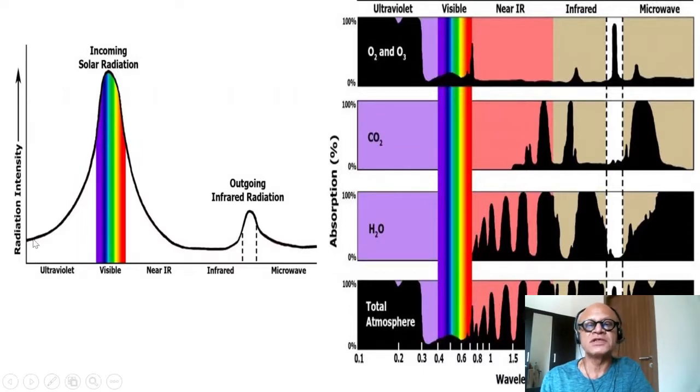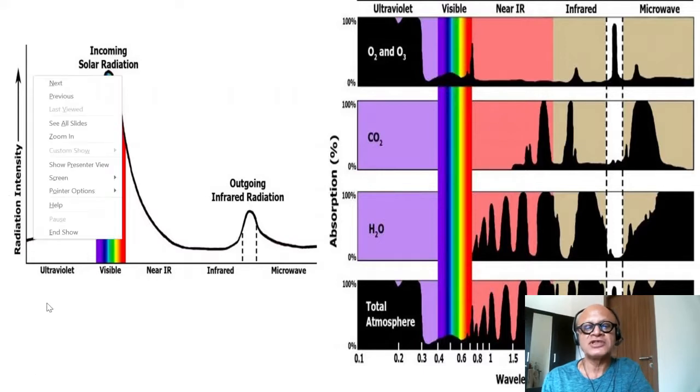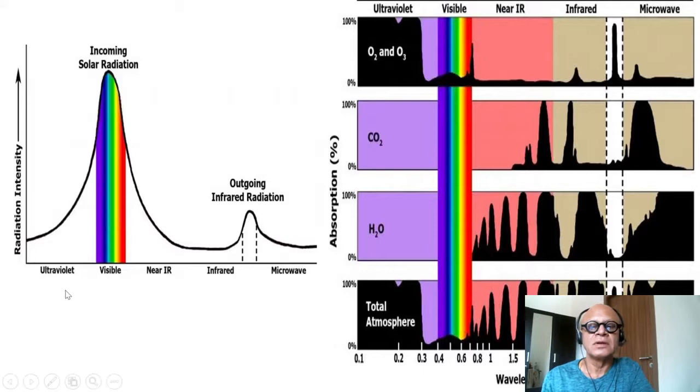Looking at the solar spectrum, obviously it's a full electromagnetic spectrum going from gamma rays, x-rays, all the way to visible where most of the energy comes into the earth, and then near infrared, infrared, out to microwaves, radio waves, and so on.